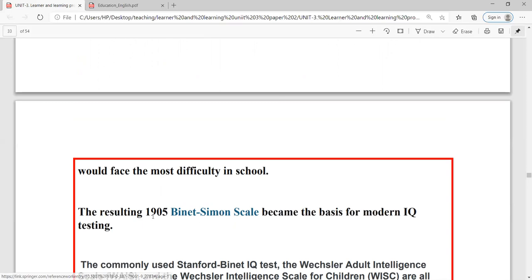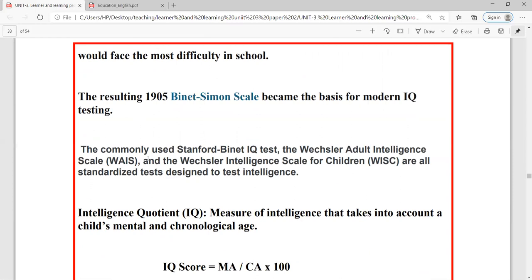The resulting 1905 Binet-Simon scale became the basis for modern IQ testing. The commonly used Stanford-Binet IQ test, the Wechsler Adult Intelligence Scale, this is a full form of IQ related, WAIS, meaning Wechsler Adult Intelligence Scale. Then, Wechsler Intelligence Scale for Children, WISC, are all standardized tests designed to test intelligence.